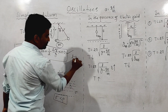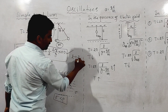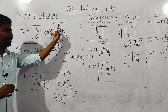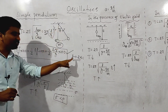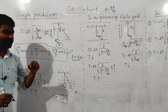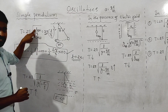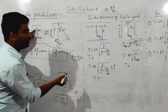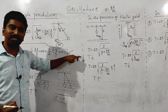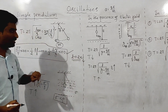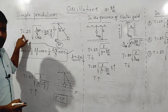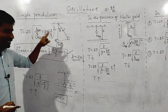For example, if the length of the pendulum changes by 2%, what is the change in the time period? If the length decreases by 2%, then since time period is directly proportional to length, the time period will also decrease.